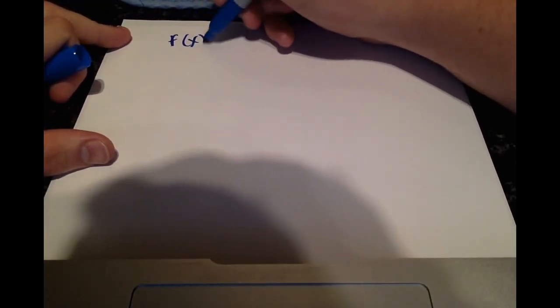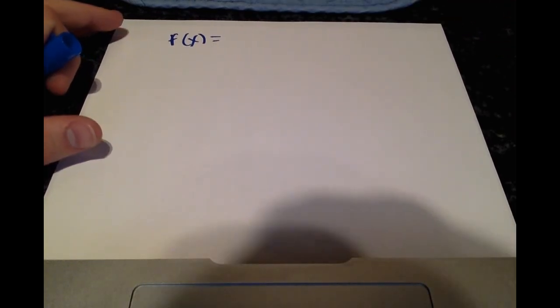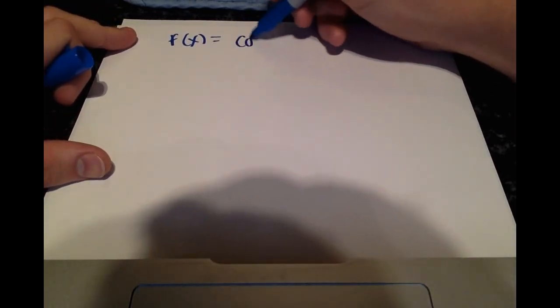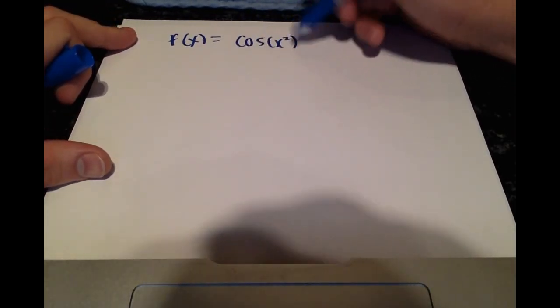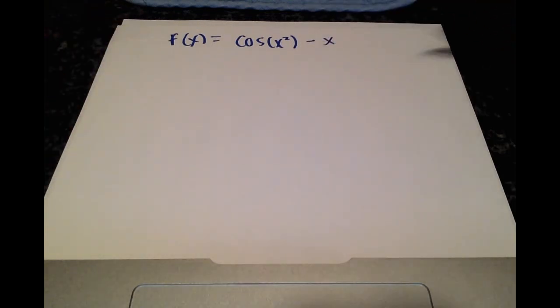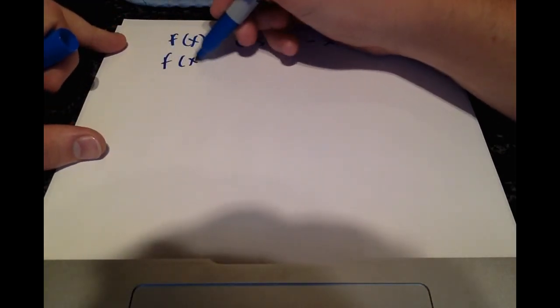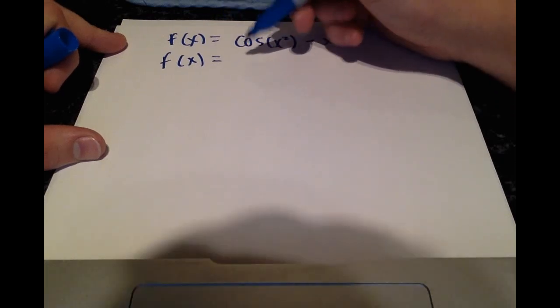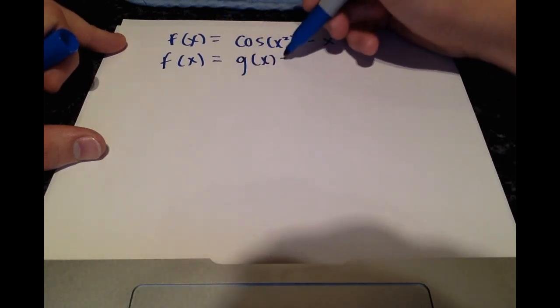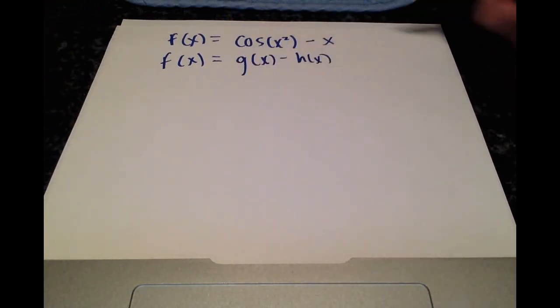So let's start by rewriting our function. f of x equals cosine of x squared minus x. Alright, and the first step is to separate this into two components, g of x minus h of x.